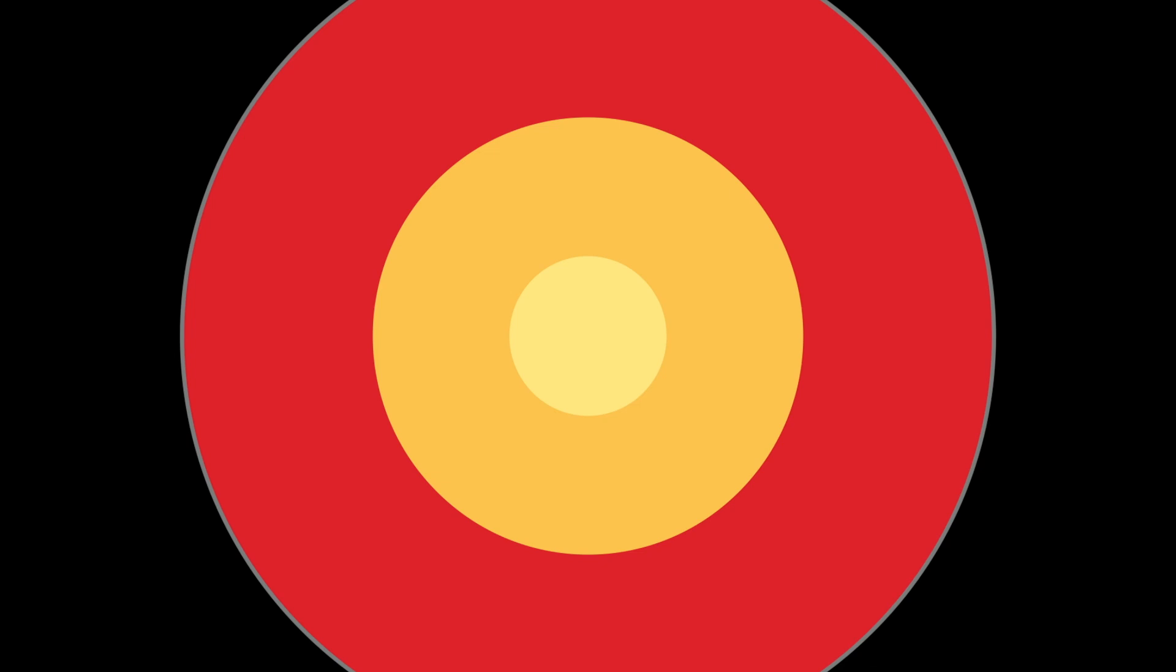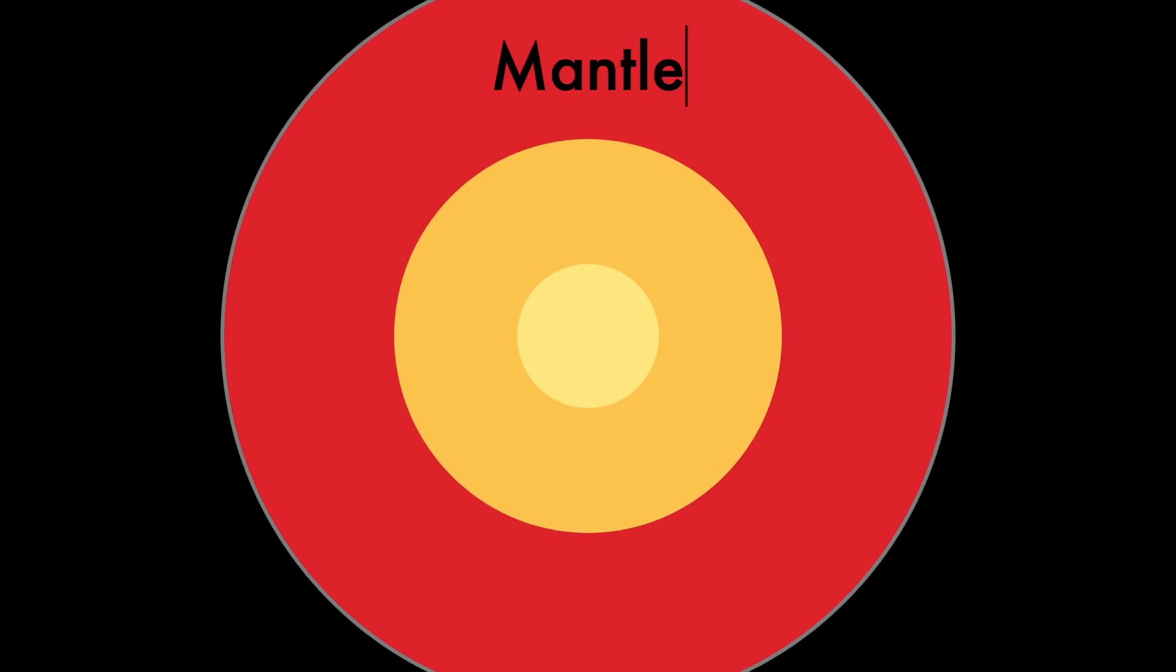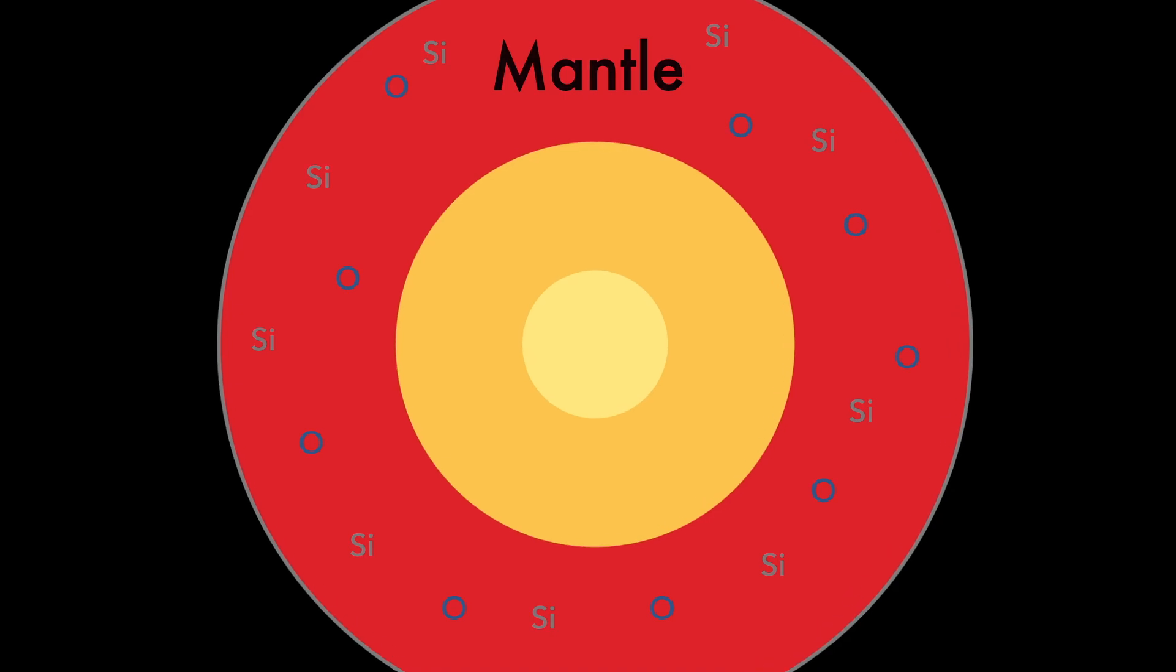At over 1800 miles thick, the mantle represents Earth's largest layer and comprises 84% of Earth's total volume. It forms a shell around Earth's hot core and spans the distance from the core to Earth's thin crust. Unlike the core layers, however, rocks that make up the mantle are not metallic but rather silicates or minerals comprised mostly of silicon and oxygen. Because of the thickness of the mantle, temperatures vary greatly depending upon depth. Near the Earth's crust, the mantle may be just 2000 degrees Fahrenheit, while closer to the core temperatures are much greater.